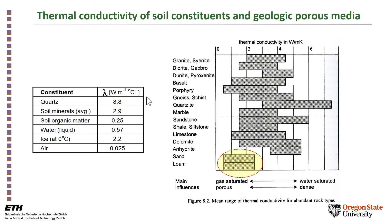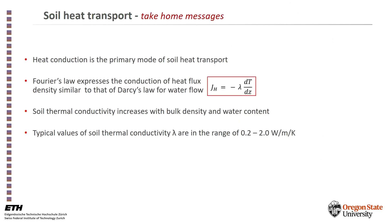Here is an image showing the range of thermal conductivities of various geologic materials — different rock types — and at the bottom we have sand and loam, which are of interest to us. The range is between 0.1 and 0.5 watts per meter per Kelvin up to about two or two and a half to three for saturated and dense soils. Among the soil constituents, air has the lowest thermal conductivity, which is why it acts as an insulator; water is in between; and quartz has the highest thermal conductivity.